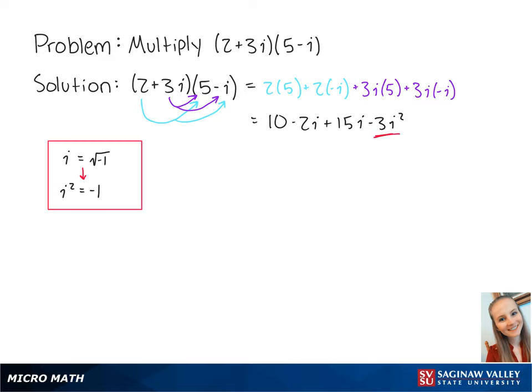Since i squared is equal to negative 1, this term is equal to negative 3 times negative 1. So our expression becomes 10 minus 2i plus 15i plus 3.